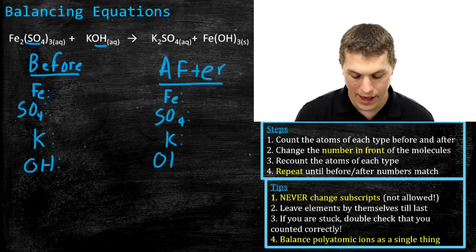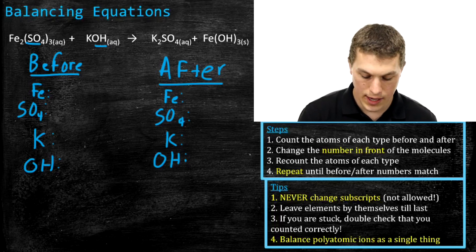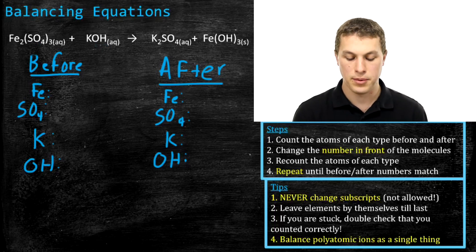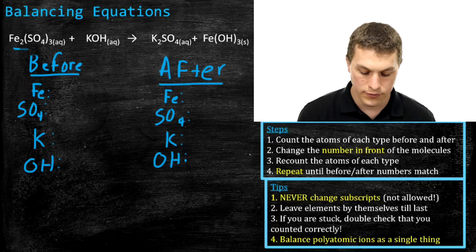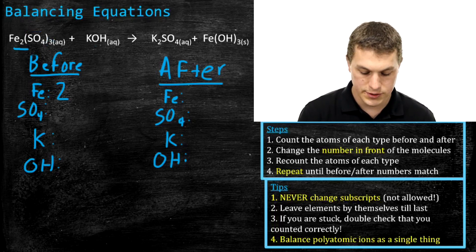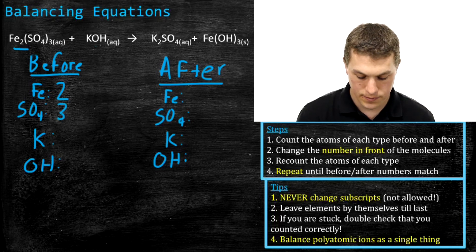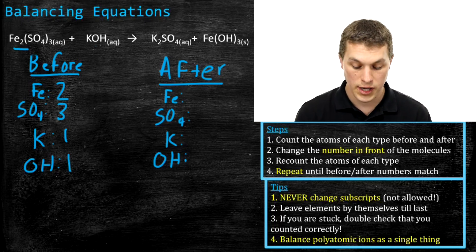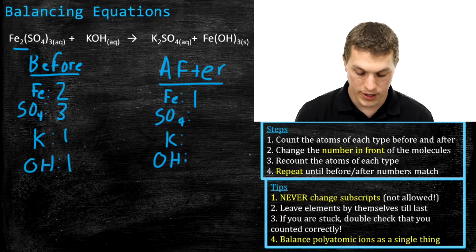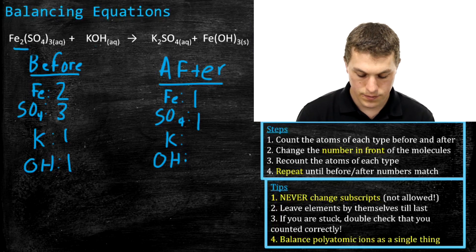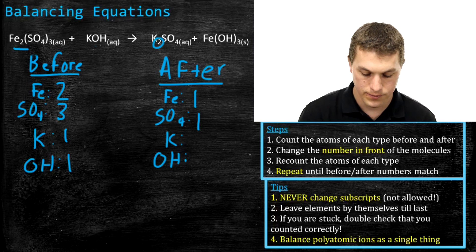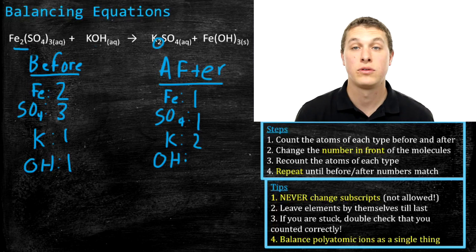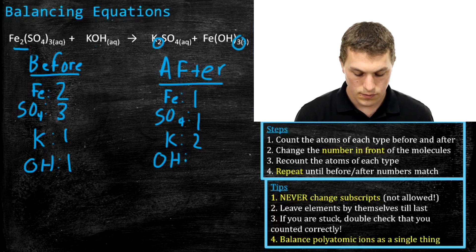Now we'll count how many of each type we have before and after. Before: two iron, three sulfate groups, one potassium, and one hydroxide — because there are no subscripts in KOH, those are all implied ones. After: one iron, one sulfate group, two potassiums (because of the subscript 2 by K), and three hydroxides.